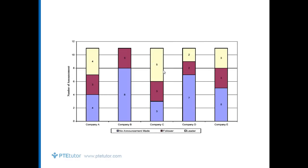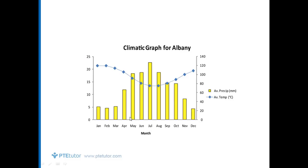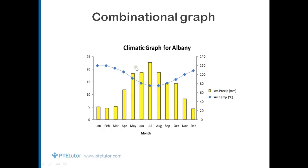Next one could be a proportional bar graph. It may seem like a regular bar graph, but as you can clearly see, there are more than two proportions given in a single bar — that is why it is called a proportional bar graph. The very next image could be a combinational graph, which includes a combination of a line as well as bars. So this image is known as the combinational graph.